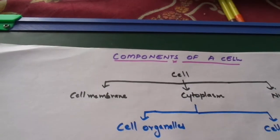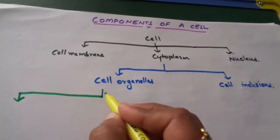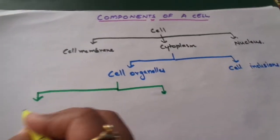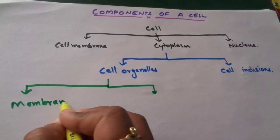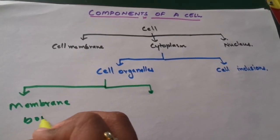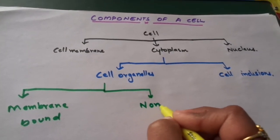The cell organelles can be further divided into two. First is membrane bound and next is non-membranous.